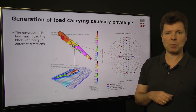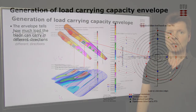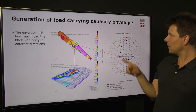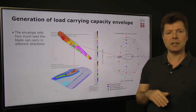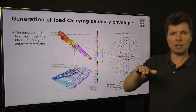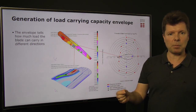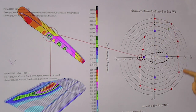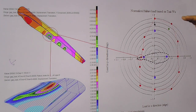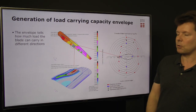Here is a case example where we have performed a finite element analysis of a wind turbine blade. We loaded the blade in the flap-wise direction and set that load to 1. We then rotated the load in different angles around the blade and scaled the load until the blade fails. This produces the red curve — the load-carrying envelope. As you can see, the blade is strongest in the flap-wise direction and weakest in the edge-wise direction towards the trailing edge.